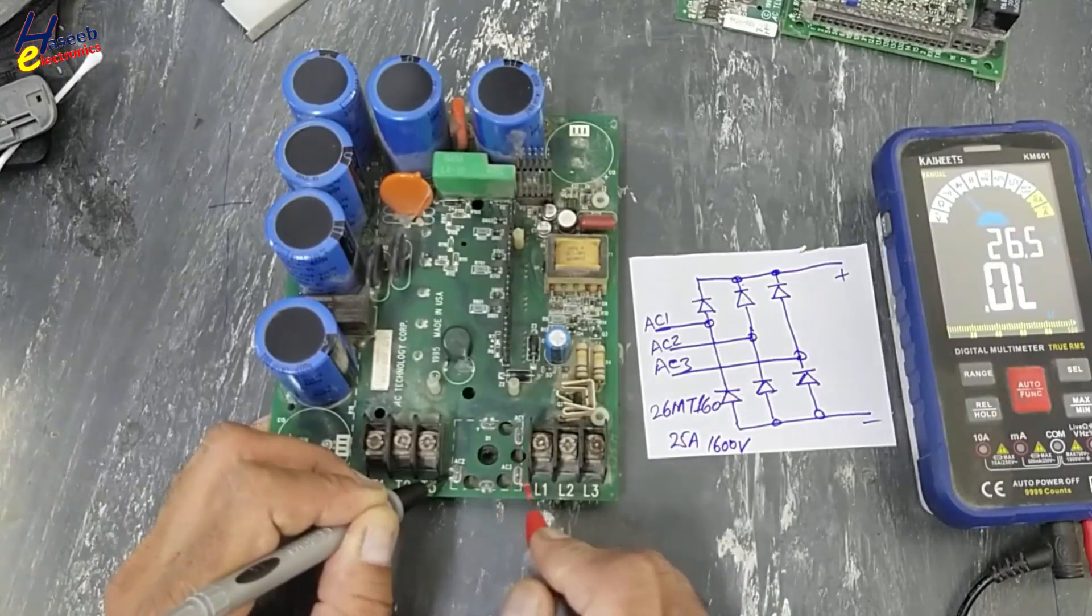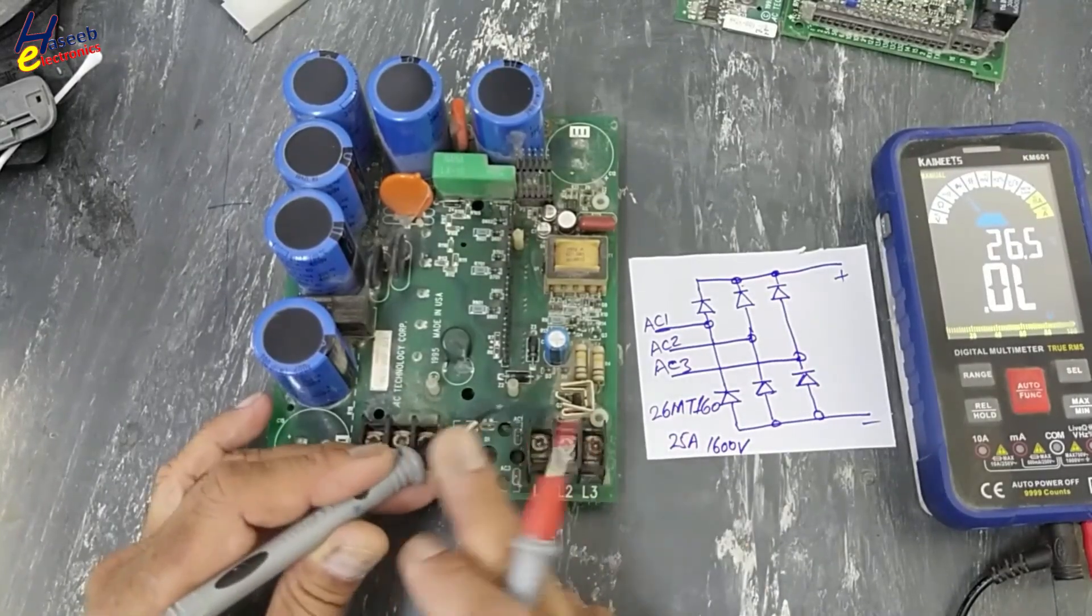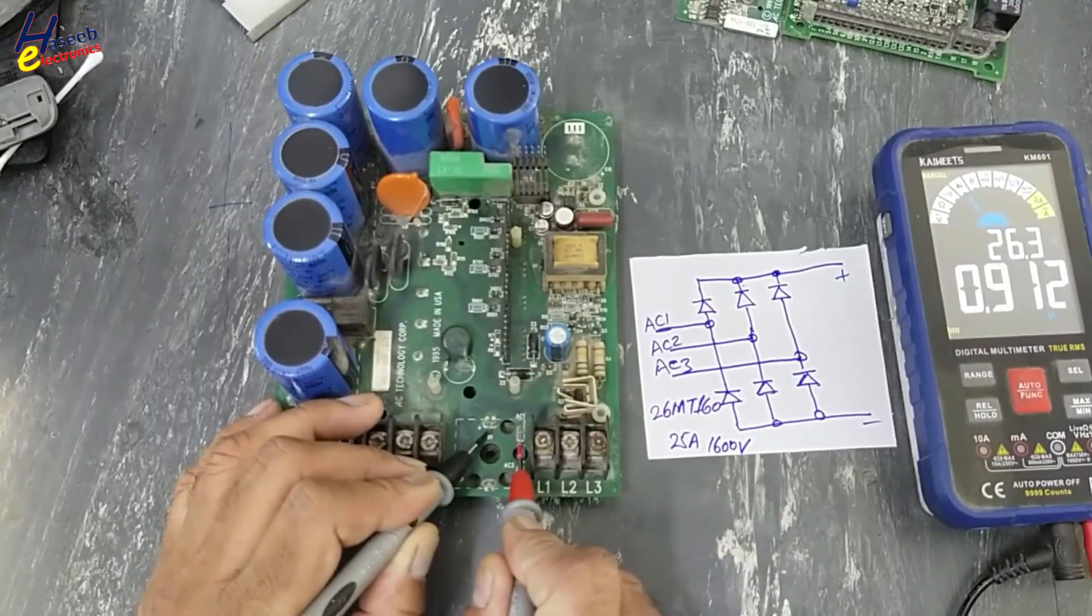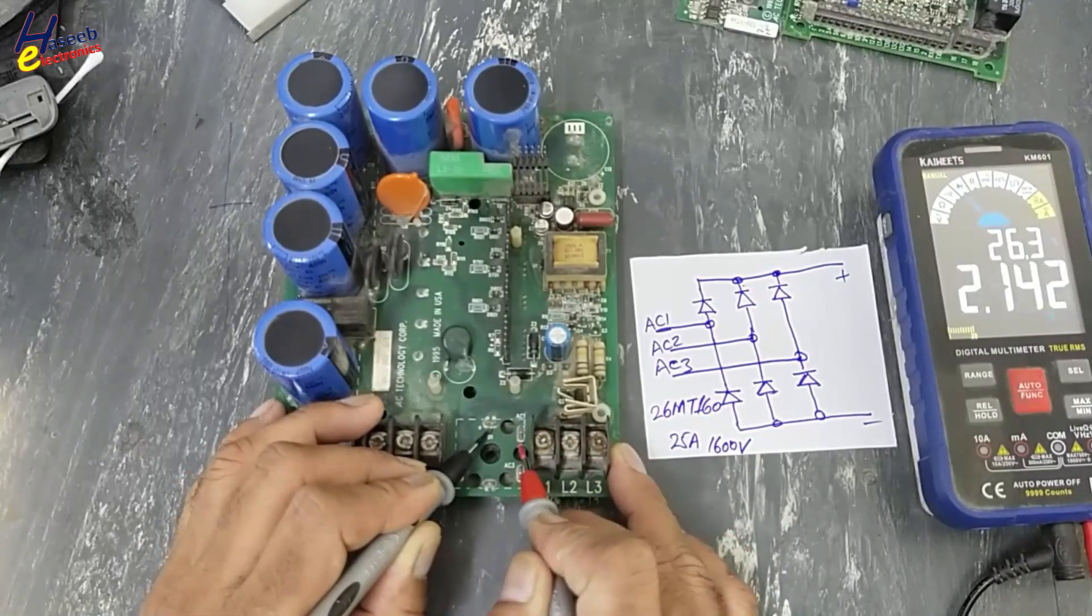Now black lead at positive terminal. One input terminal - one diode forward voltage. Second input terminal - one diode. Third input terminal - one diode. It is good indication.